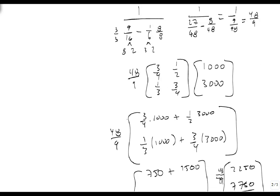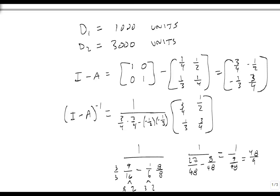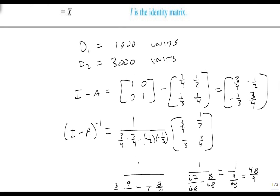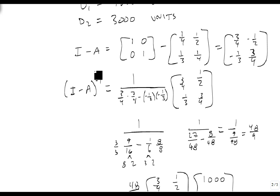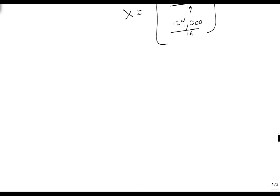The part that you need to remember is, if I give you d, can you take (I minus A), take the inverse of it, and multiply it by d to get your result.